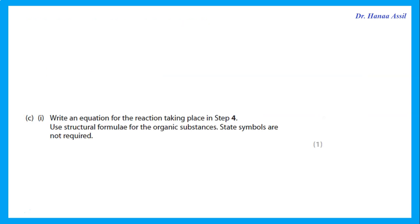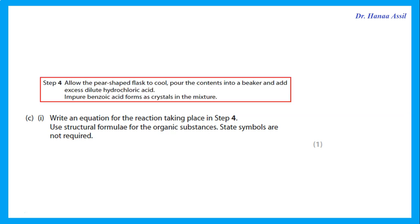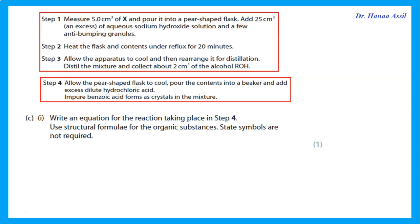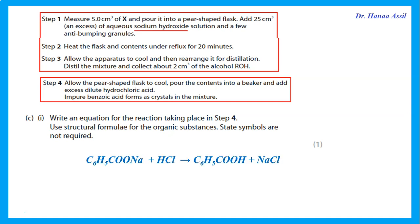Write an equation for step 4 using structural formulae. In step 4, the contents of the pear-shaped flask contain the sodium salt of benzoic acid (from hydrolysis of the ester with NaOH). Adding excess dilute HCl gives: sodium benzoate + HCl → benzoic acid + NaCl. The equation is already balanced.